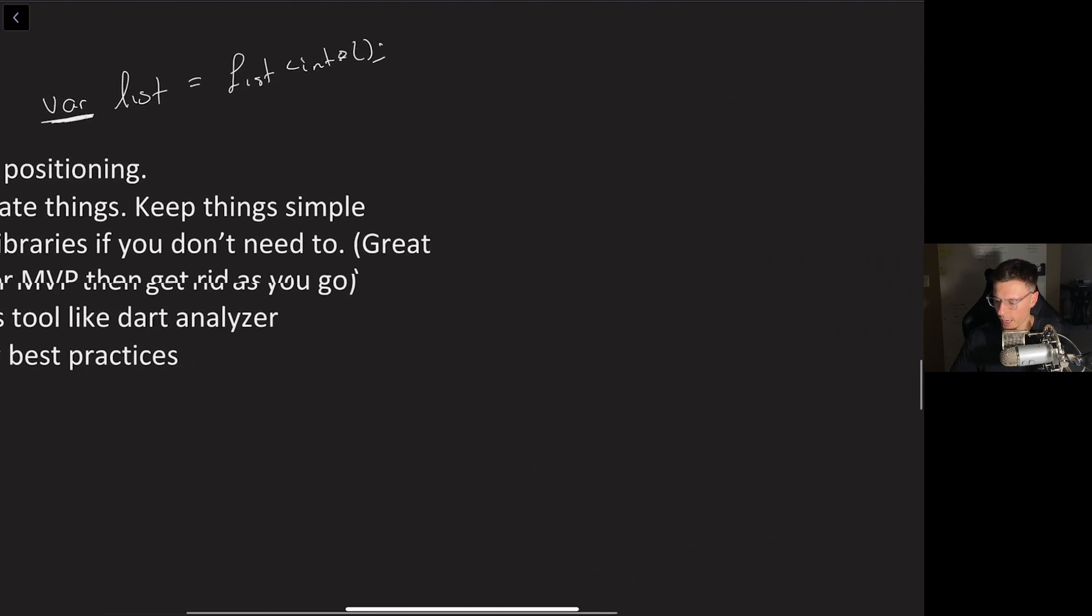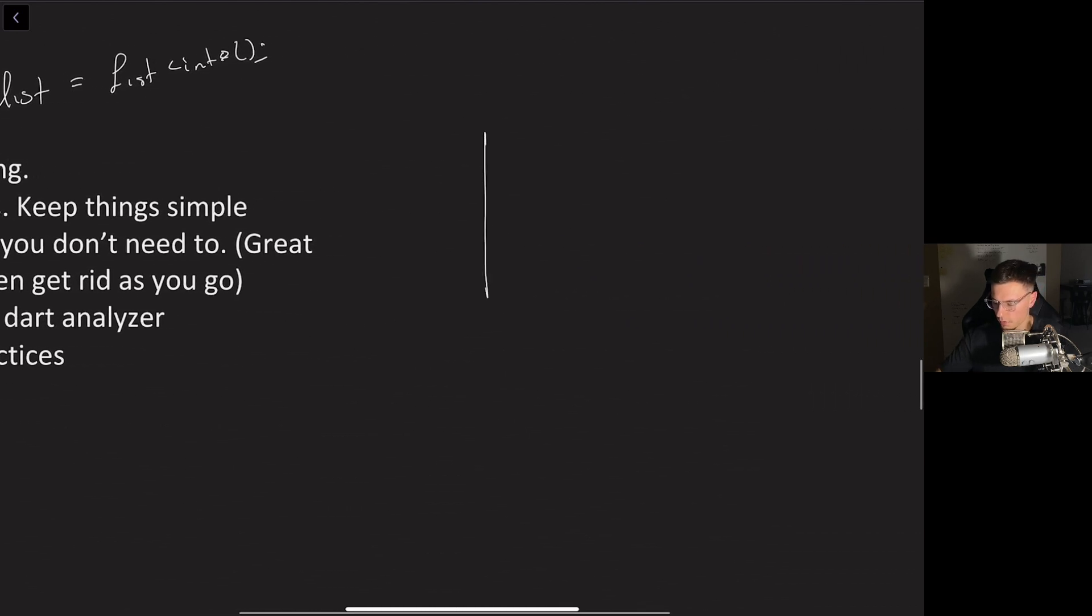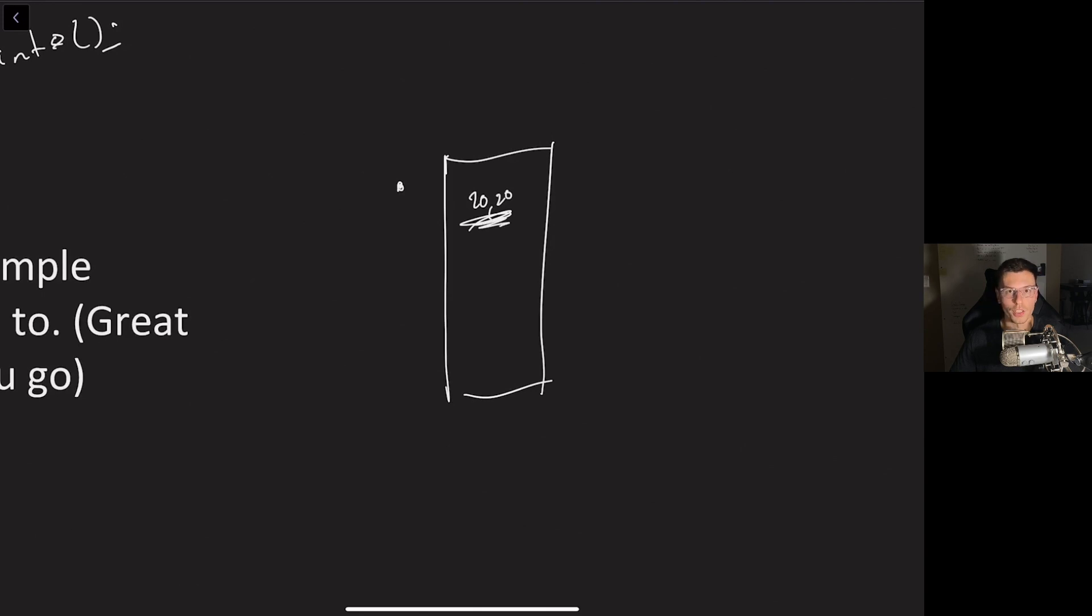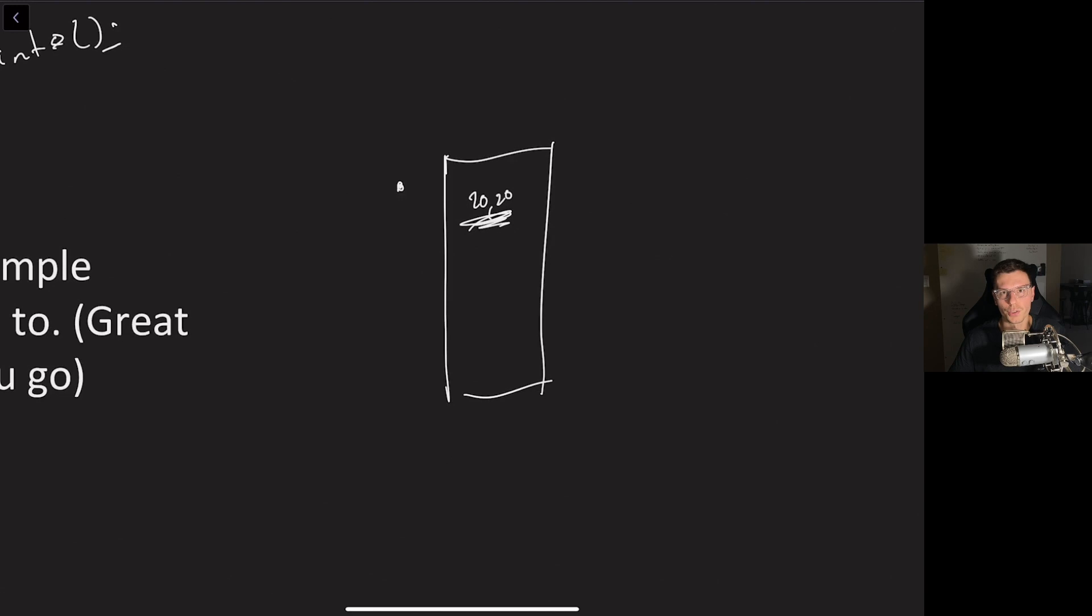Second point is do not use absolute positioning. What I mean by absolute positioning, let's say you have your app like this and you want to put a dot somewhere, don't tell it position 20 pixels and 20 pixels. This will get you in a lot of trouble when it comes to reactive programming and just making your UI good overall.